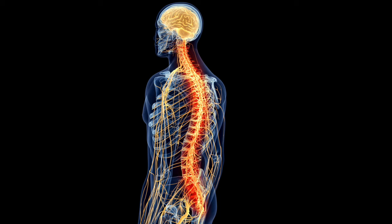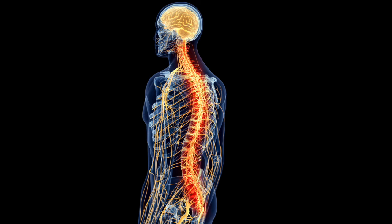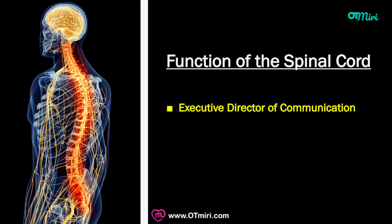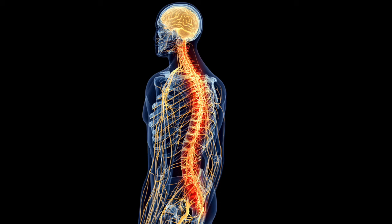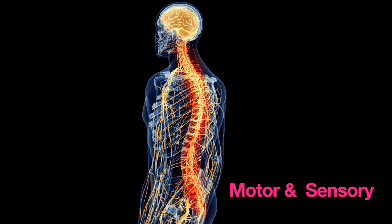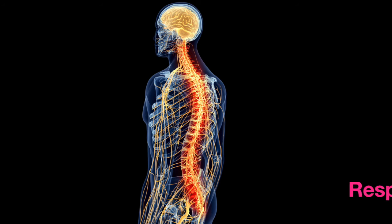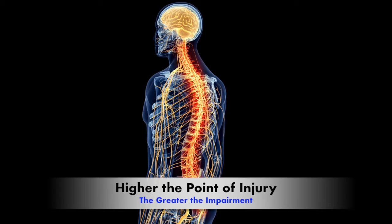Before I go over each level, I want to briefly talk about the function of the spinal cord. If I were to ascribe a human characteristic to it, I'd give it the title executive director of communication, because the spinal cord is essentially in charge of relaying messages — a conduit between the brain and the rest of our body. When there's an injury, the functions below that level will suffer impairment, including motor and sensory impairments.